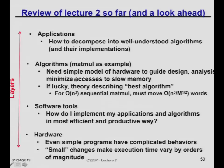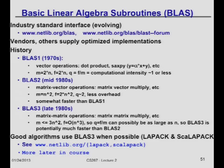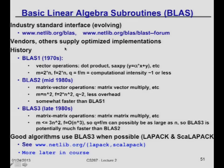Let me go back to the story of algorithms. Matrix multiply was one of those things everybody agreed was important. In fact, it's so important that there's an industry standard — everybody's agreed on the name of the subroutine, and no matter what computer you're on there's a library with the same name and same interface. You just call it, and there's a team of programmers somewhere in the world that has spent all their time optimizing it for that particular platform. This is the BLAS — Basic Linear Algebra Subroutines — and every time a computer vendor comes out with new hardware, they tune it to run as fast as possible.